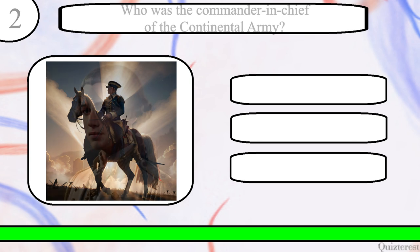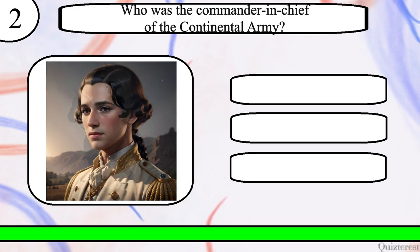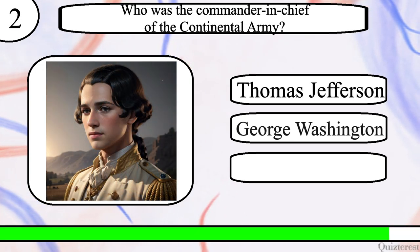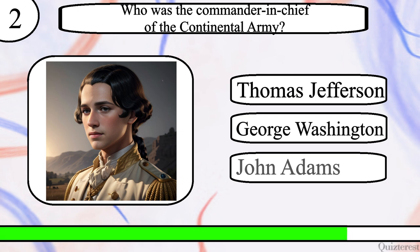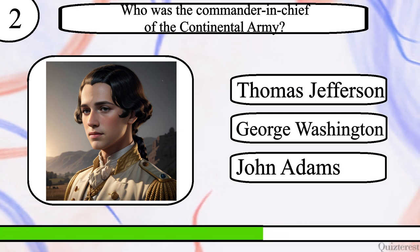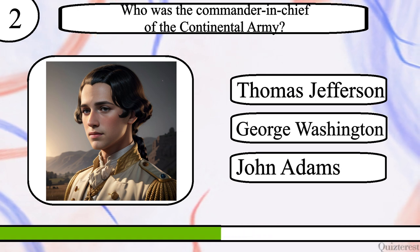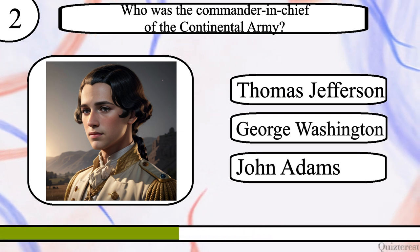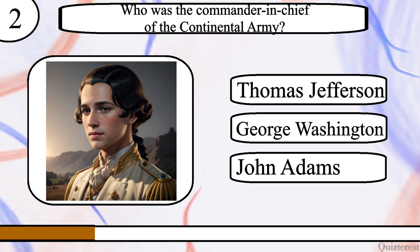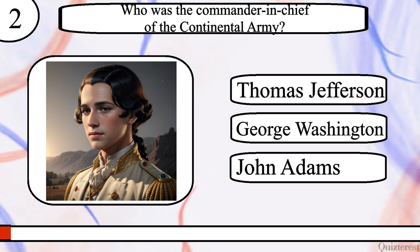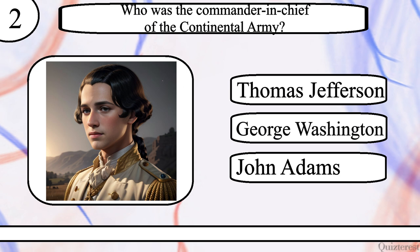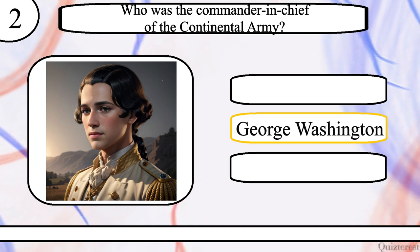Question 2. Who was the Commander-in-Chief of the Continental Army? Thomas Jefferson, George Washington, or John Adams? The correct answer is George Washington.